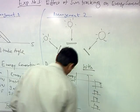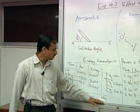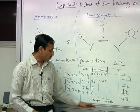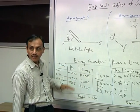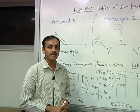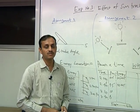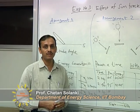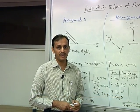At the end, sum up the total energy generated in watt-hours for both arrangements. The whole objective of this experiment is to compare how much extra energy is generated in arrangement 2 (sun tracking). This is a very busy experiment because at every time step you have to find the IV characteristic for both arrangement 1 and arrangement 2, so a team of people can do this experiment very nicely. Compare the energy and draw your conclusion about the advantage of sun tracking.